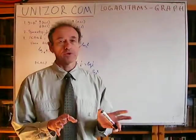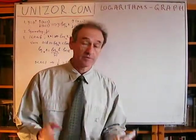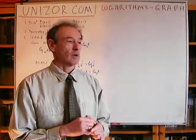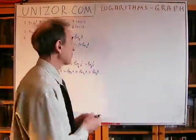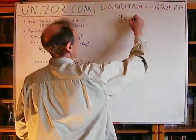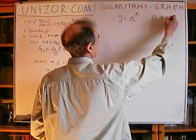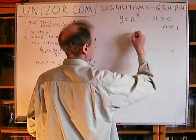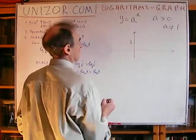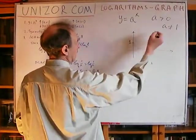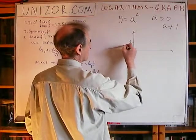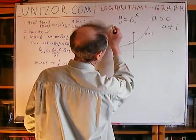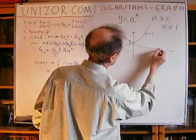The key point is that the logarithmic function is an inverse function to the exponential function. We all know how the exponential function looks. For a greater than one, its graph goes like this, and for a less than one, it goes like this.